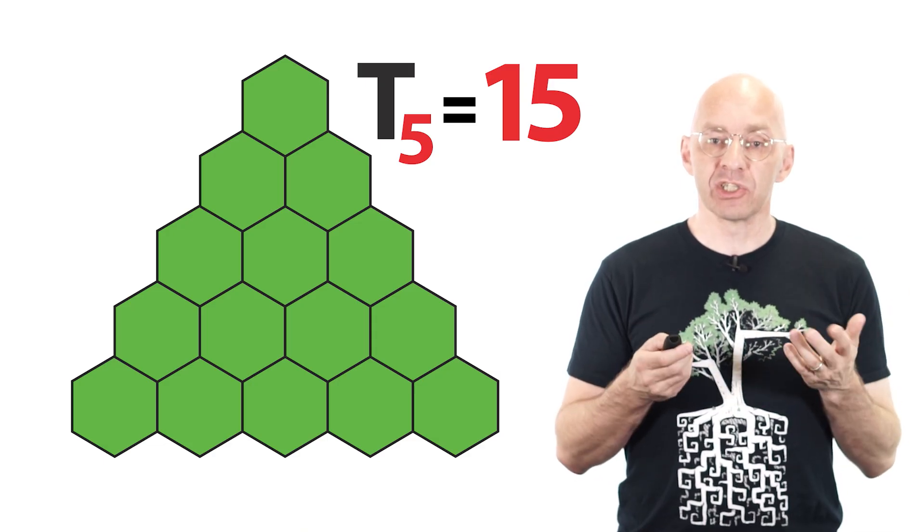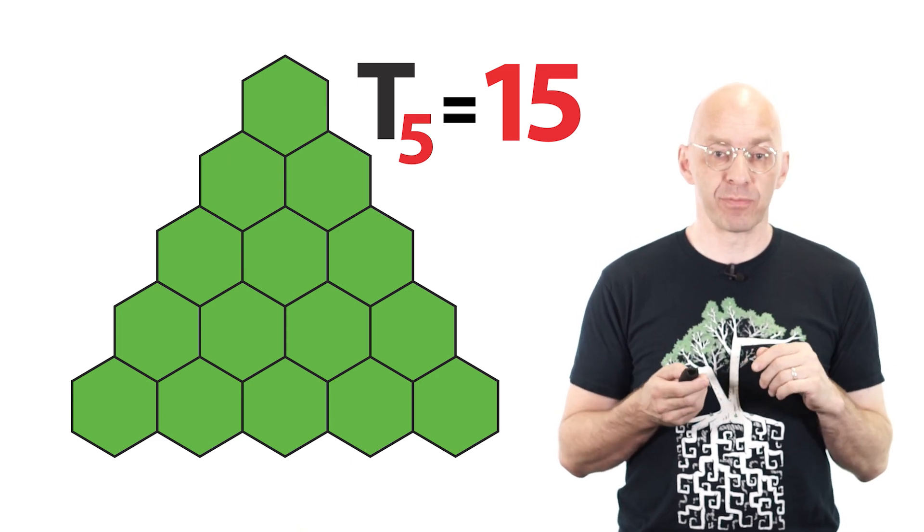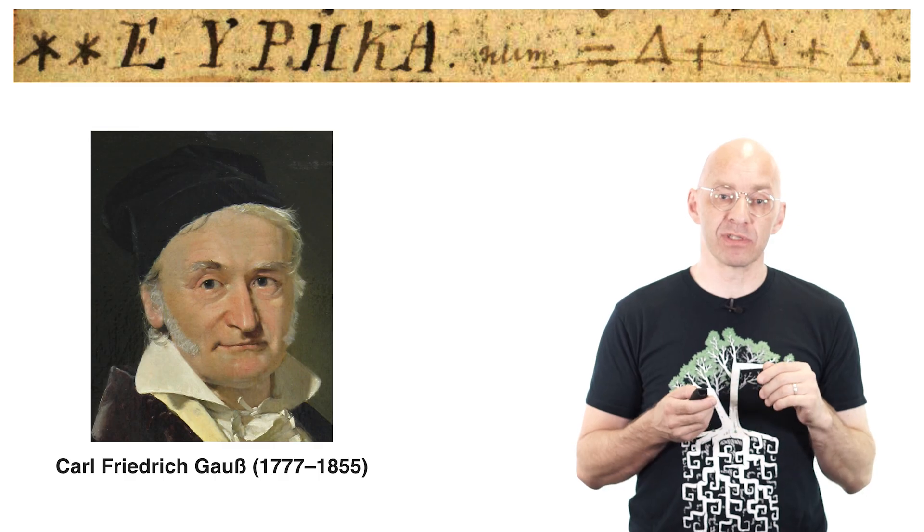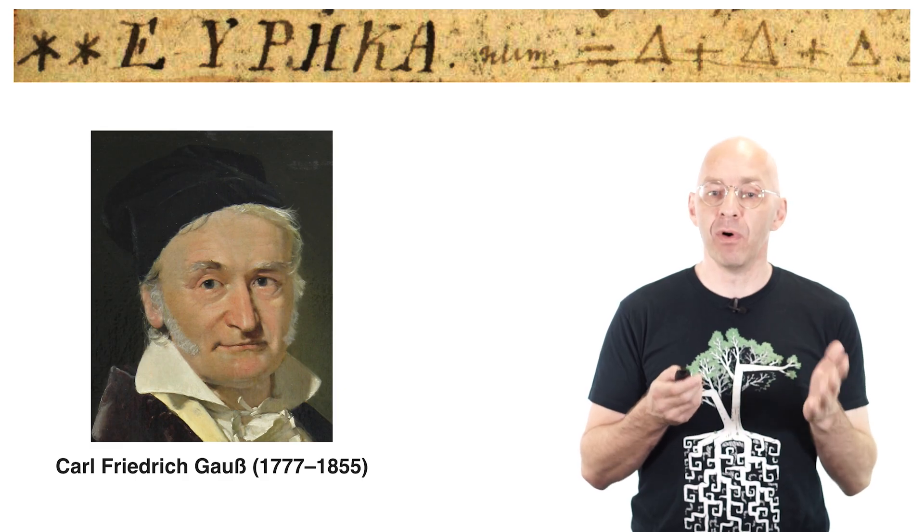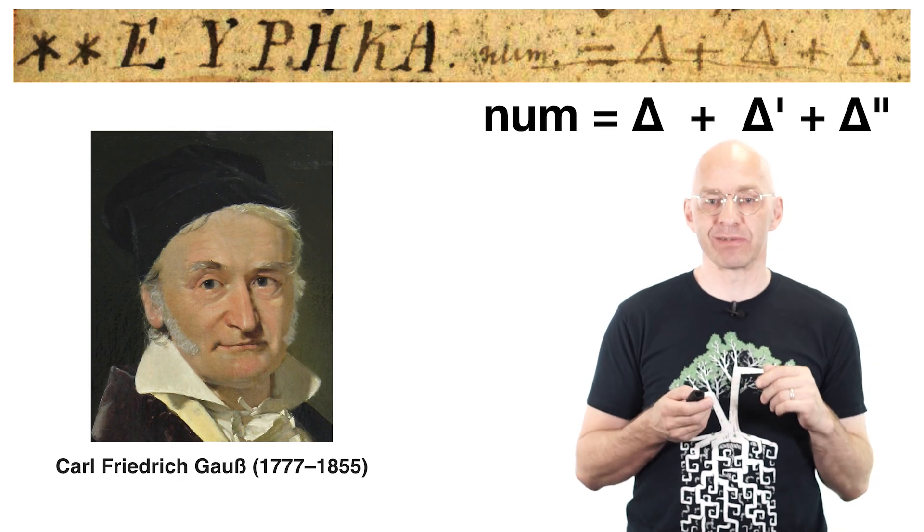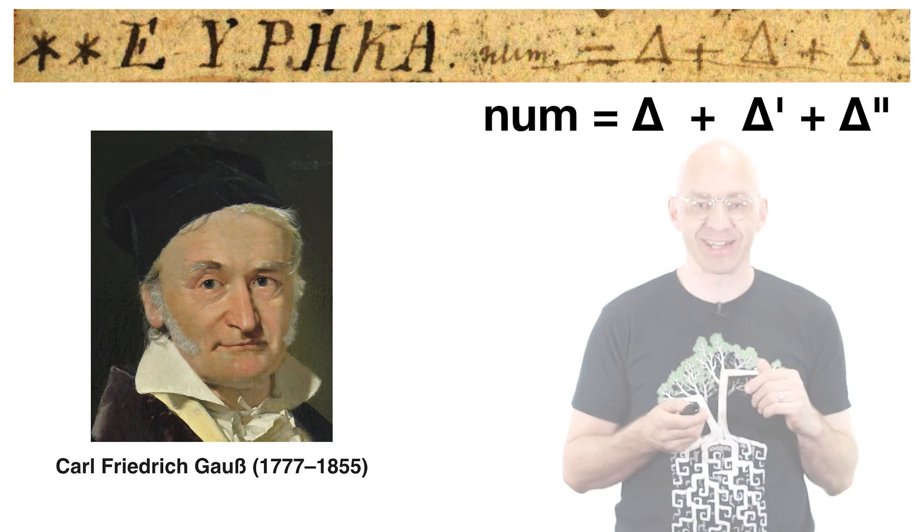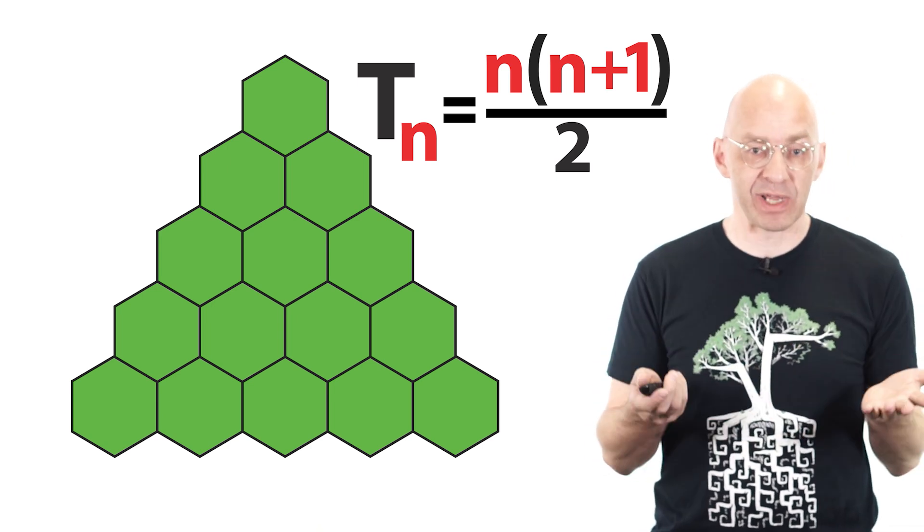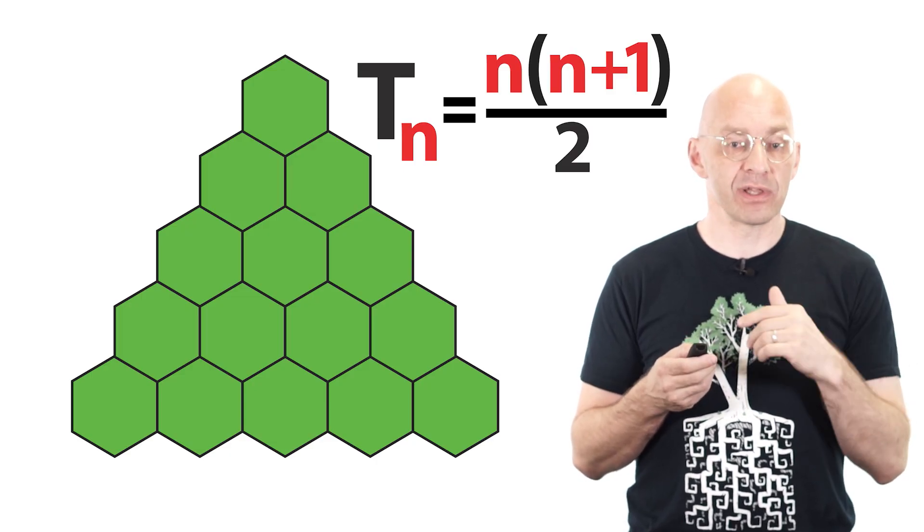Now just like the integer squares the triangular number also feature prominently in number theory and a lot of famous mathematicians have proved theorems about them. For example up there is one of the most famous entries in Gauss's mathematical notebook. It says that every positive integer is the sum of at most three triangular numbers. You can tell that Gauss was really excited about having found a proof for this. Just have a look at the eureka in really bold letters preceding the statement.